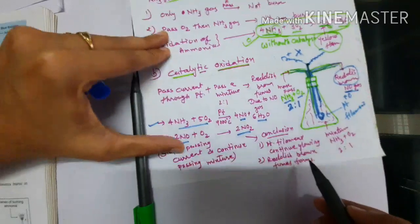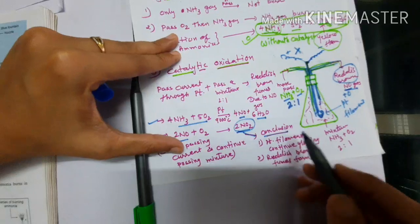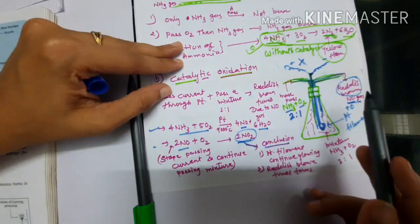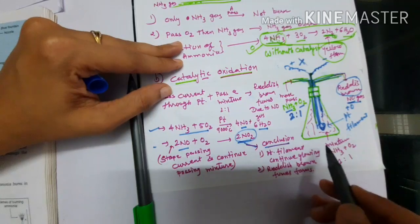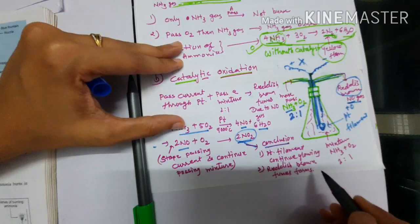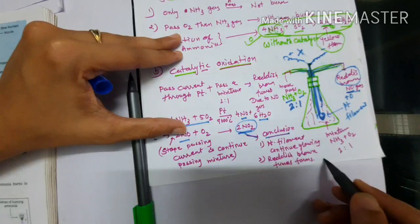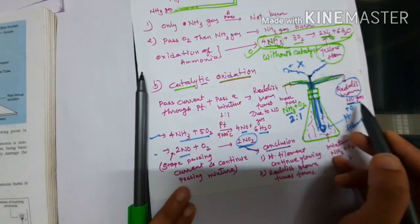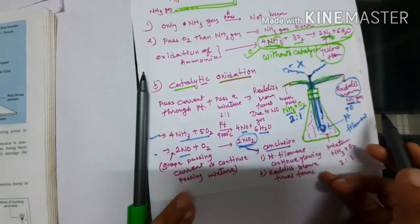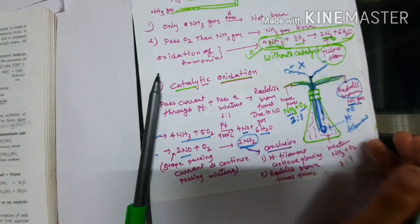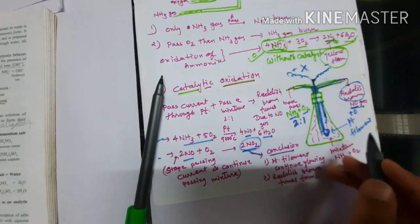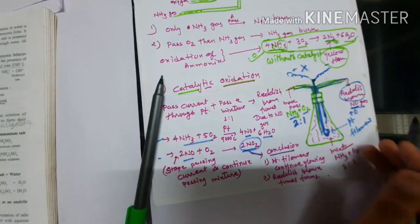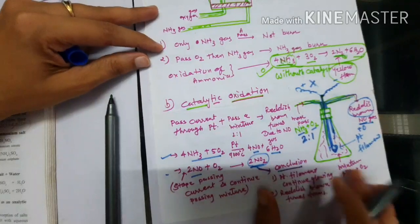The nitrogen dioxide comes out through the pipe. The first conclusion is that the platinum filament continues to glow even after the current is stopped — meaning we do not need to keep passing current, and yet the platinum filament keeps glowing. The second conclusion is that a reddish-brown fume comes out: at the initial stage it is nitrogen oxide (NO), and afterward it becomes nitrogen dioxide (NO₂). Both nitrogen oxide and nitrogen dioxide appear as reddish-brown fumes.